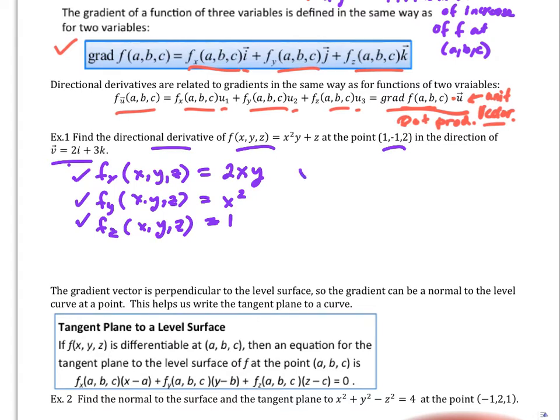So let's go ahead and write the gradient. So the gradient of f is going to be 2xy i plus x squared j plus k. So now if we evaluated at the point (1, -1, 2) we're great.